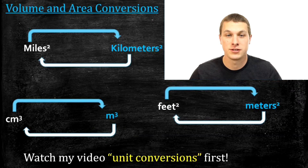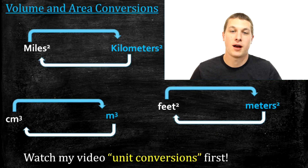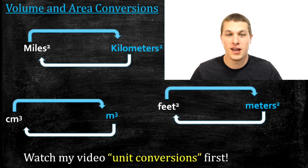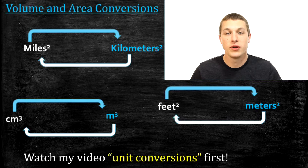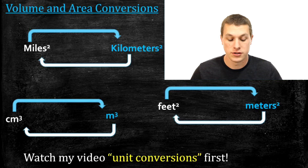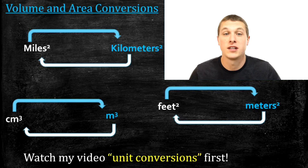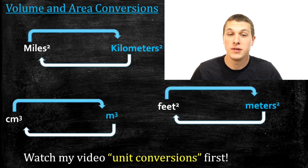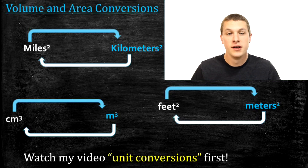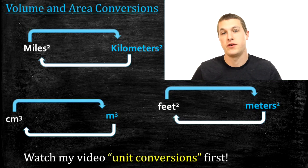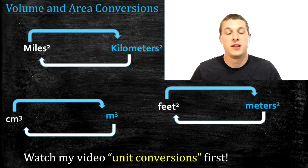In this episode of Real Chemistry, we're going to talk about volume and area conversions. You can take units from say miles squared to kilometers squared, or from centimeters cubed to meters cubed, or even from feet squared to meters squared. These conversions follow slightly different rules than typical conversions.